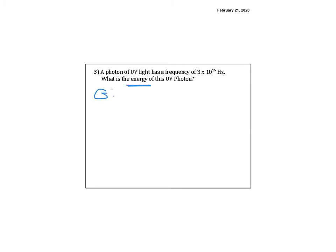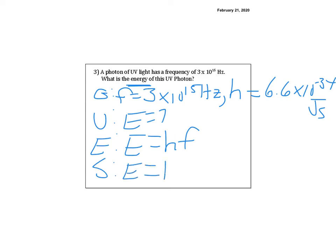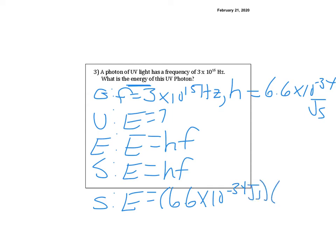We know UV light has a lot of energy, so let's set up the given: F equals 3 times 10 to the 15th Hertz. I don't need C this time; because I'm dealing with energy, I need Planck's constant H, which is 6.6 times 10 to the negative 34th joule-seconds. The unknown is E, and the equation is E equals HF — already solved. Plugging in: E equals 6.6 times 10 to the negative 34th joule-seconds times 3 times 10 to the 15th Hertz.